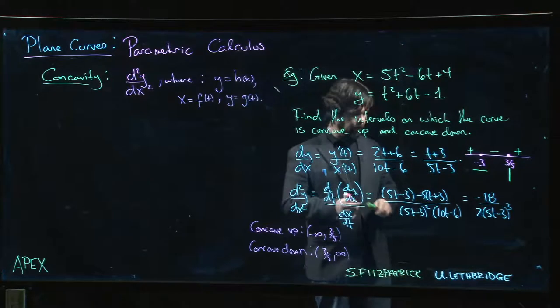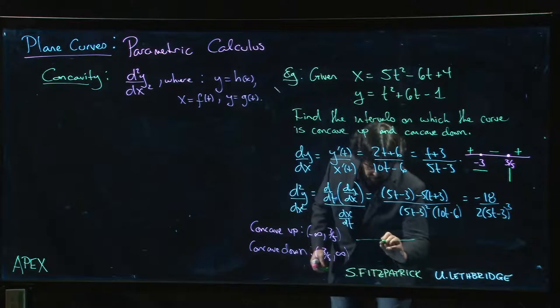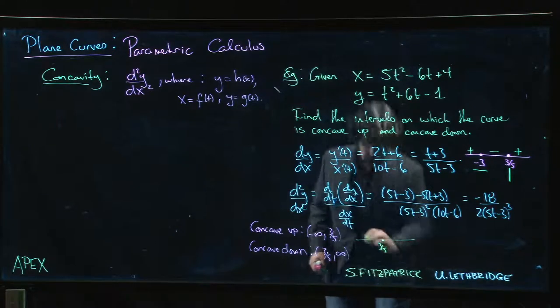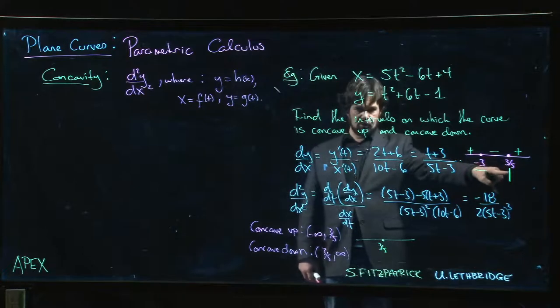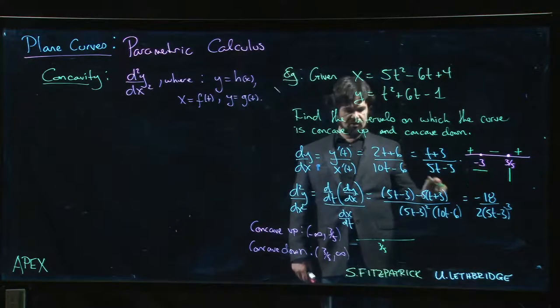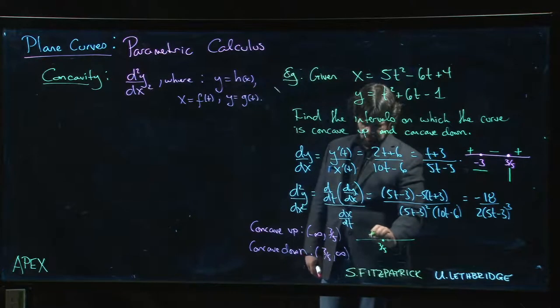For concavity, we have that one point at t = 3/5. Well, it's not exactly a point of inflection because it corresponds to a vertical tangent, but we'll see what it looks like nonetheless. It's concave up, then concave down.